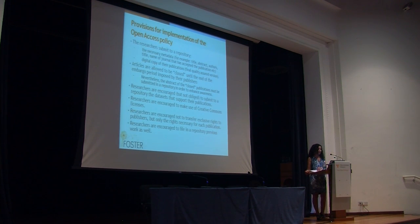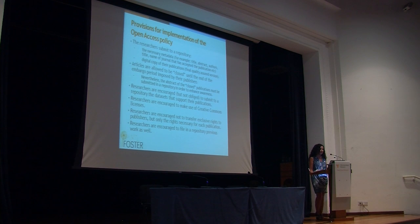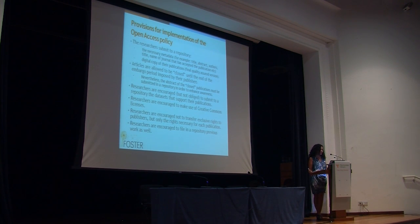The provisions we have included in our policy paper require that researchers submit to a repository the necessary metadata — for example, title, abstract, author, name of the journal that has accepted the publication, etc. — and a digital copy of their publication, the final quality short version. They do this at the same time, in parallel with submission to the journal.